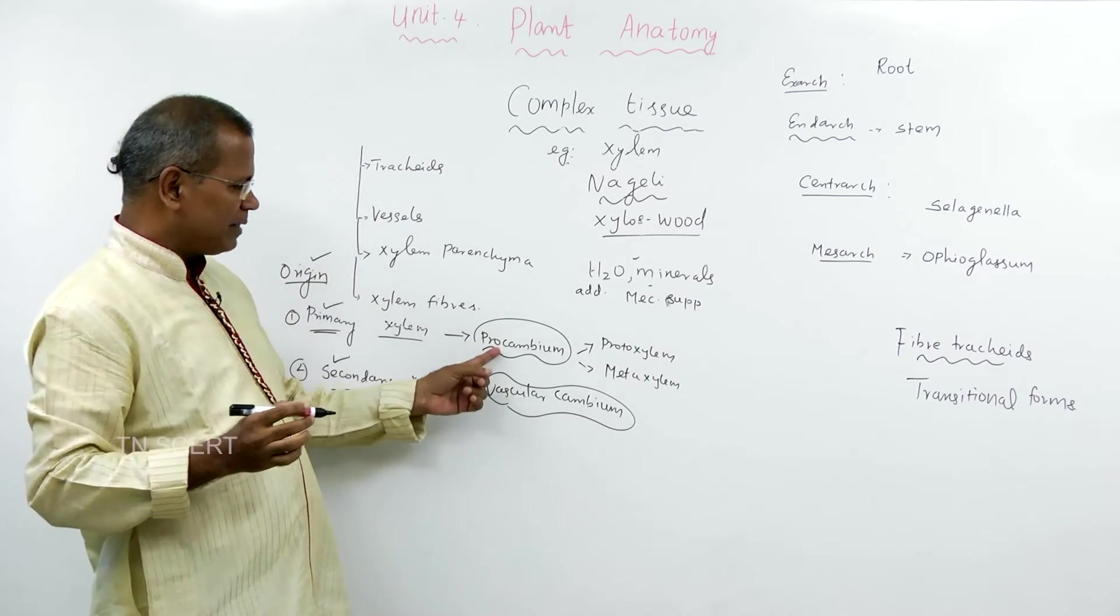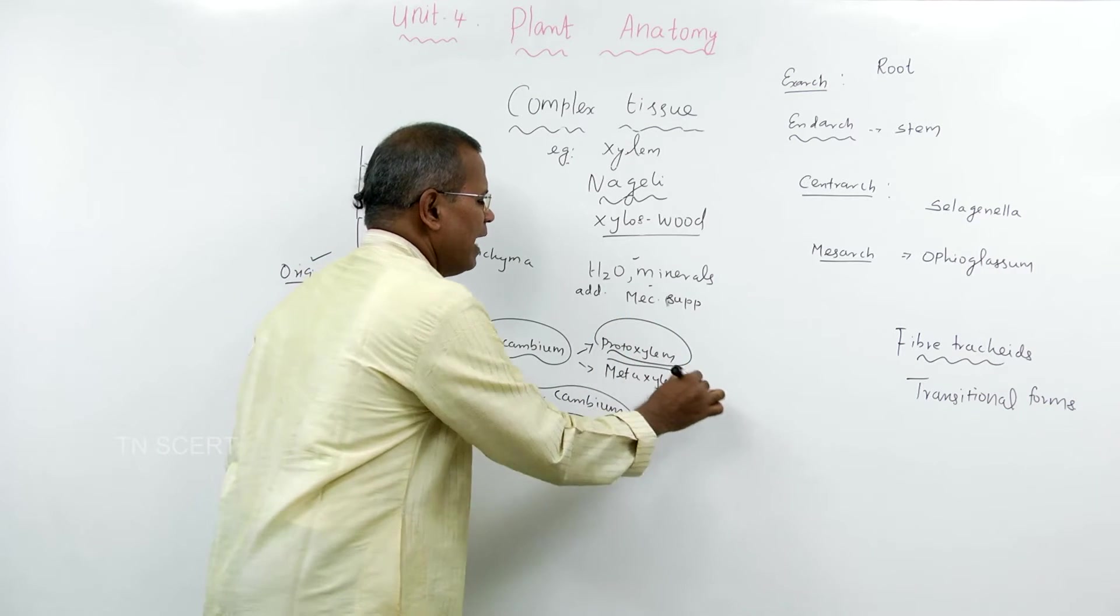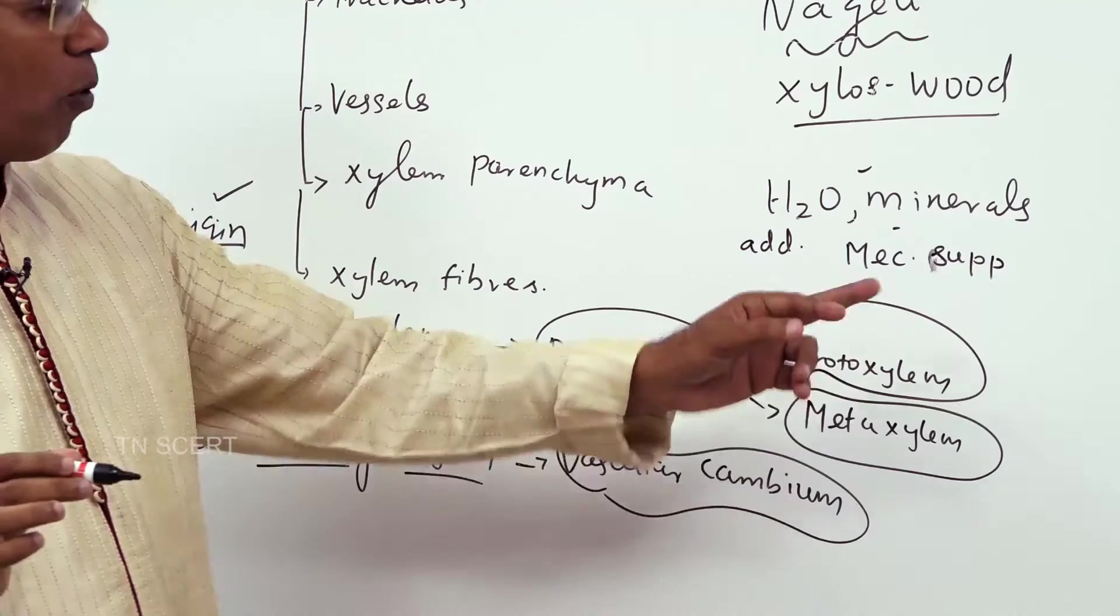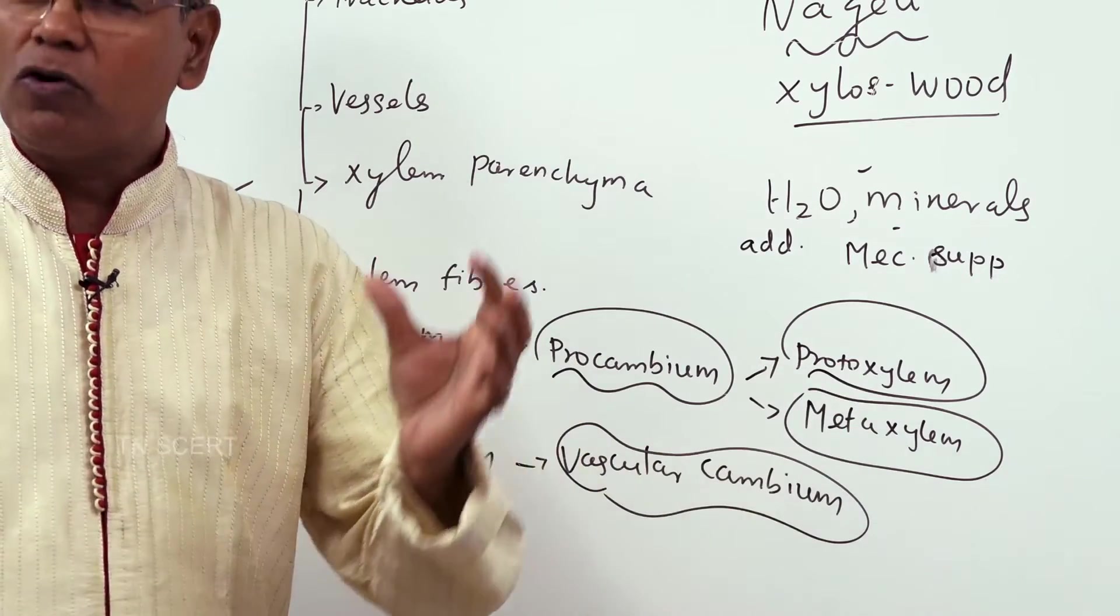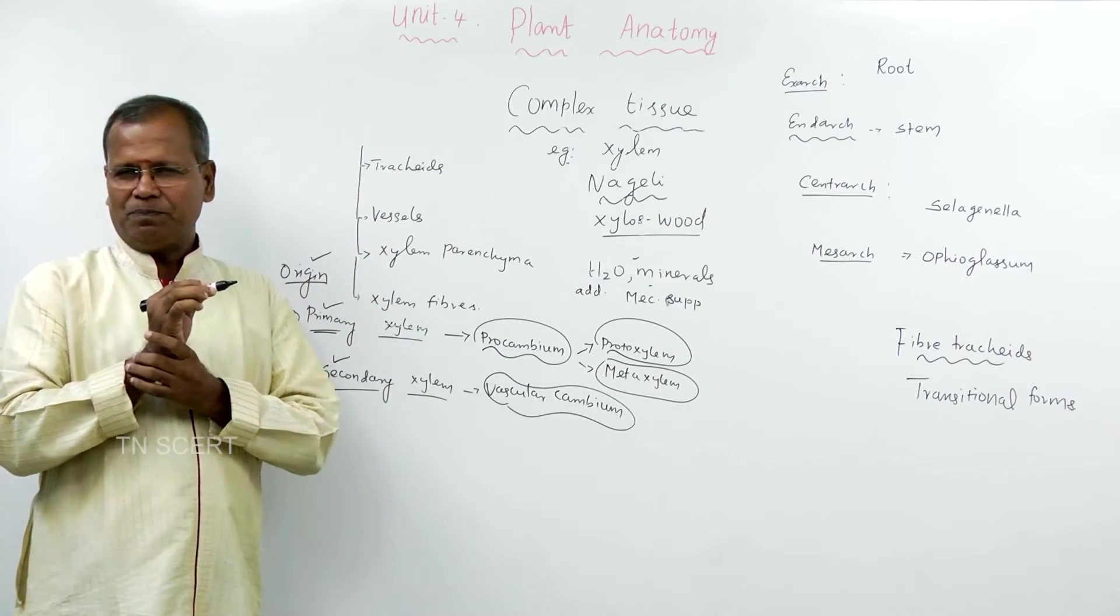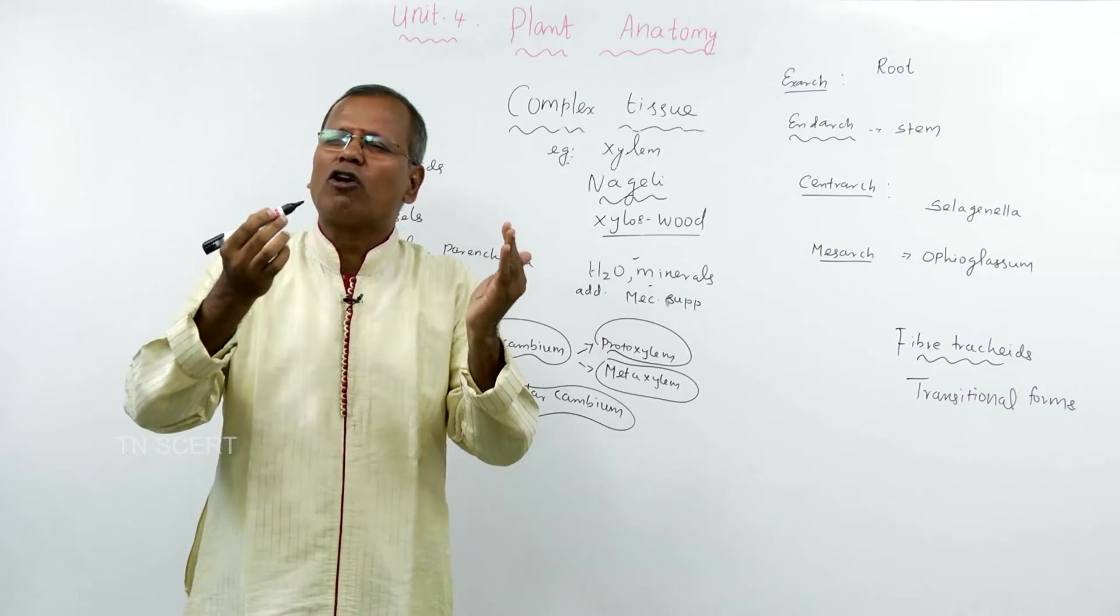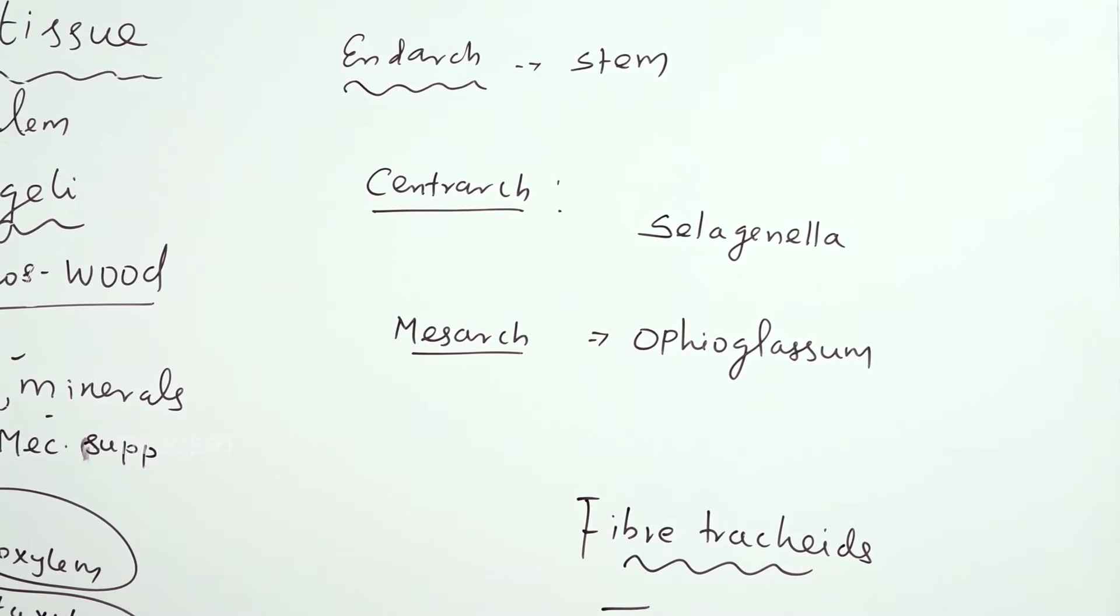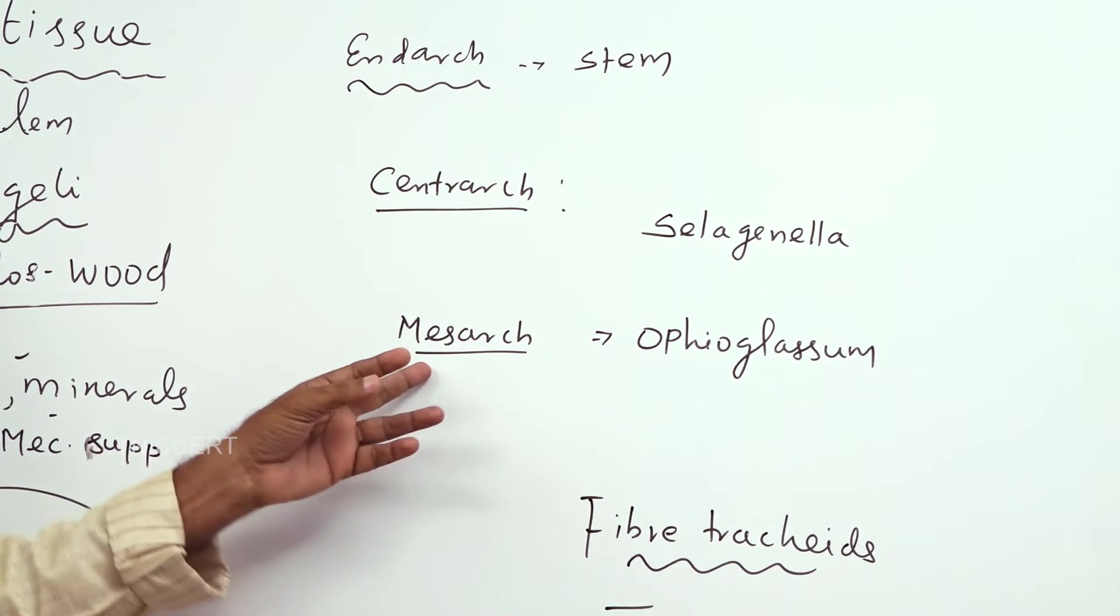The primary xylem once again differentiated into the first formed protoxylem and later formed metaxylem. This is the basic classification. The primary xylem is the type of xylem, exarch xylem, endarch xylem, centrarch xylem, mesarch xylem.